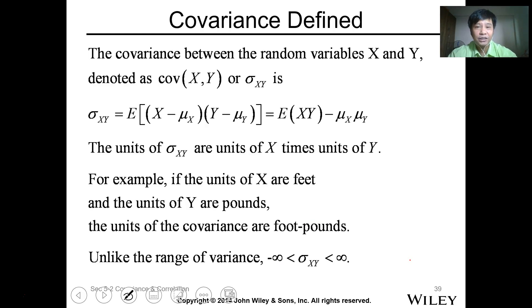For covariance, denoted as sigma xy or cov(x,y), it's equal to the expected value of the product of the difference of your variable minus the mean value. Or you can have the expected value of xy - multiply each parameter and minus the product of the mean. Take note that the unit of sigma are units of x times unit of y. Multiply the units. And the range of value is from negative infinity to infinity.